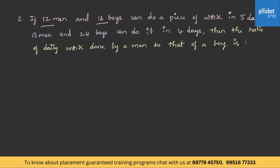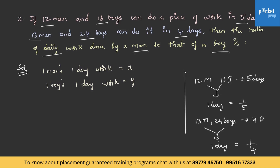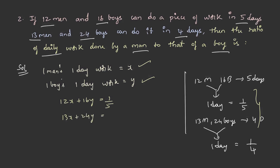If 12 men and 16 boys can do a piece of work in 5 days, and 13 men and 24 boys can do it in 4 days, then the ratio of daily work done by a man to that of a boy is. Let us assume 1 man's 1 day work as x and 1 boy's 1 day work as y. Since 12 men and 16 boys finish in 5 days, the part of work done in 1 day is 1 by 5, giving equation: 12x plus 16y equals 1 by 5. Similarly, 13x plus 24y equals 1 by 4.